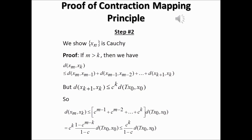From the previous lecture, we showed that for every positive integer k, the distance between the k plus one term and the k-th term is less than or equal to c to the power k times the distance between T(x_0) and x_0. So the distance between the n-th and n minus one terms is less than or equal to c to the power n minus 1 times d(T(x_0), x_0), and the distance between the n minus one and n minus two terms is less than or equal to c to the power n minus 2 times d(T(x_0), x_0).